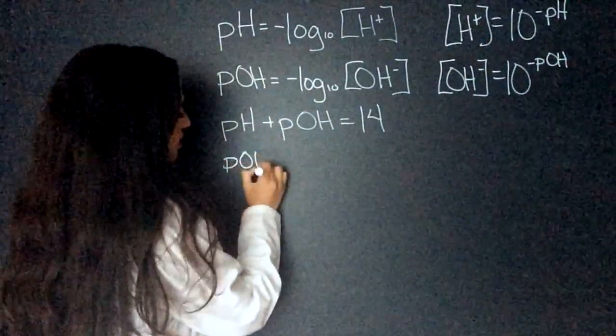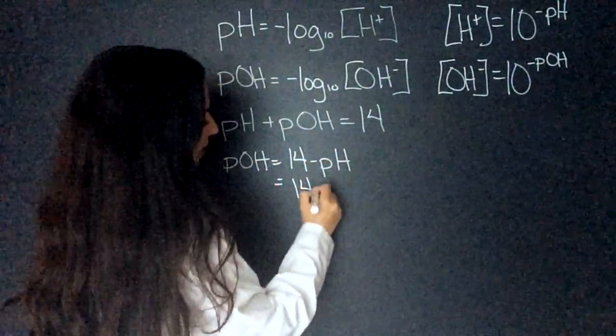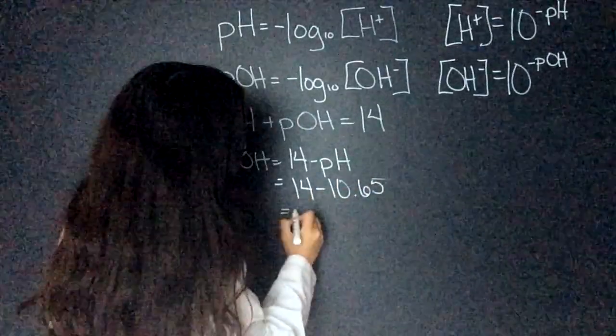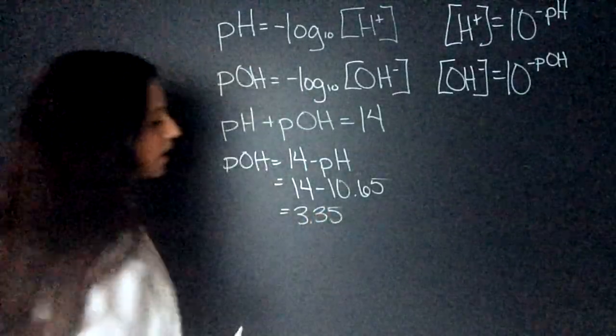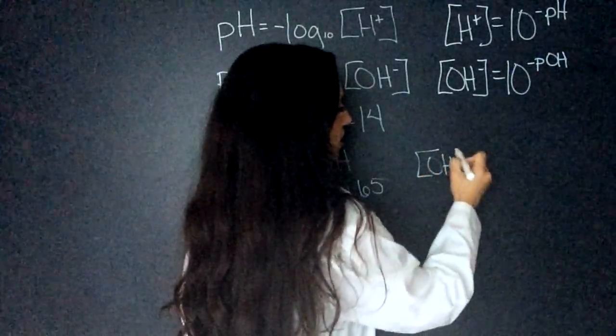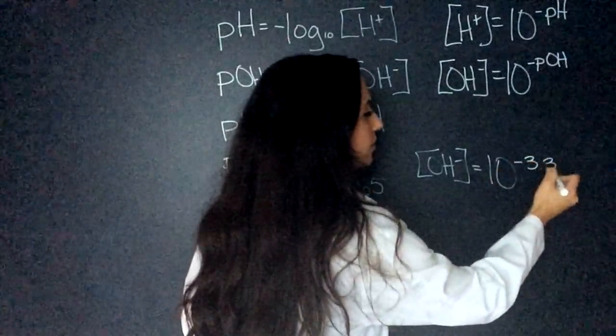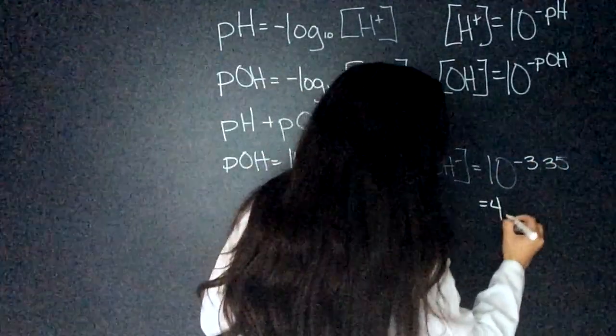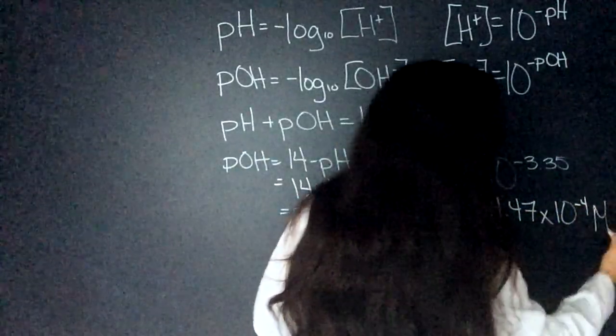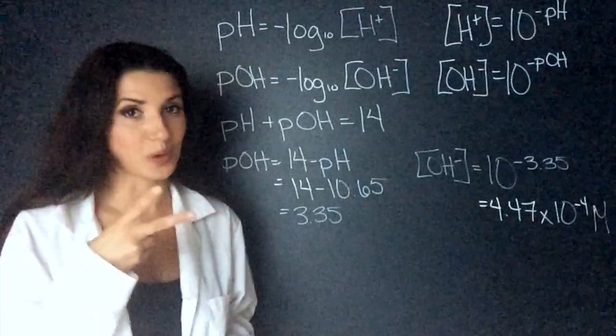So, if we rearrange this, we know that pOH is going to equal 14 minus the pH. They told us that the pH is 10.65. So, when I subtract this, I get 3.35. Now, I can plug it in. So, the OH concentration is going to equal 10 to the negative 3.35. That's going to equal 4.47 times 10 to the negative 4 moles per liter. If you're just in beginner chemistry, that's kind of one of the hardest questions you'll get. Because you have to use two equations.